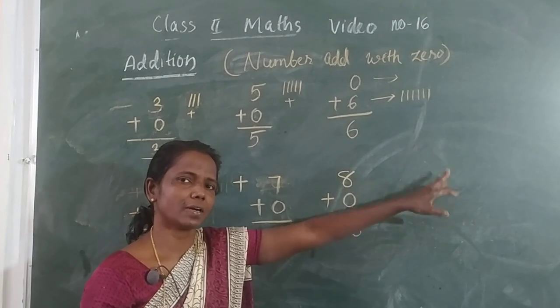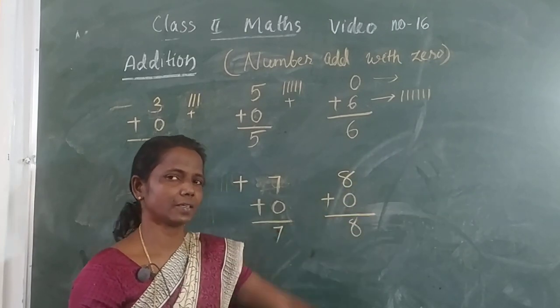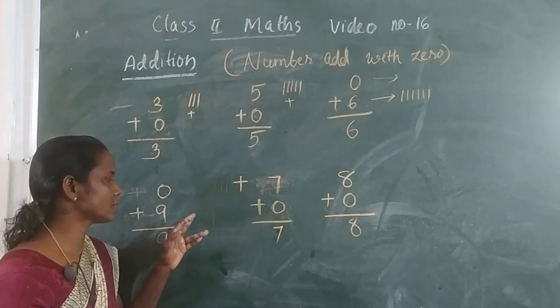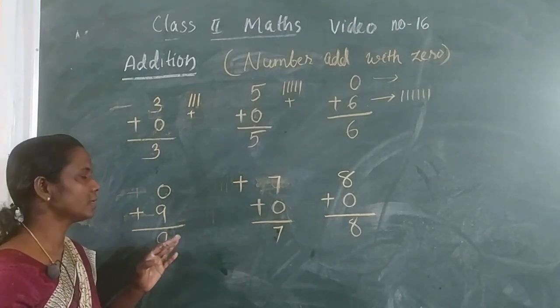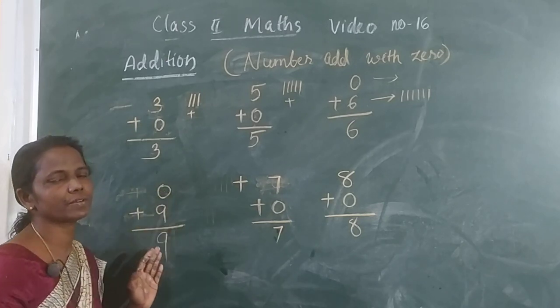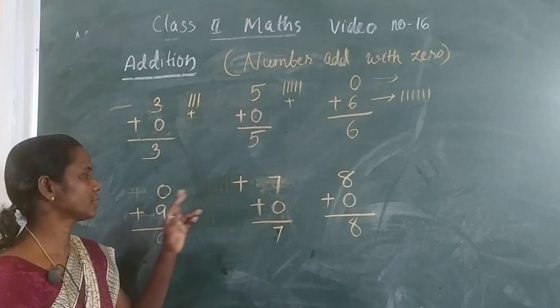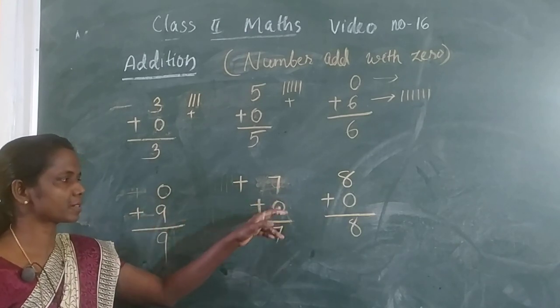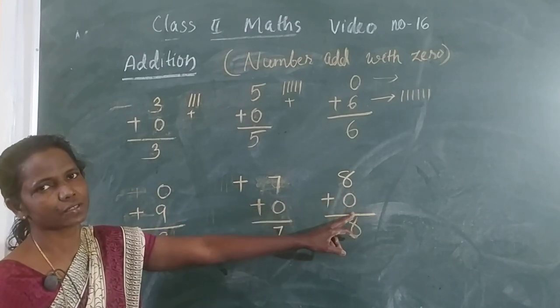100 plus 0? 100. Then 0 plus 9? 9. 7 plus 0? 7. 8 plus 0? 8.